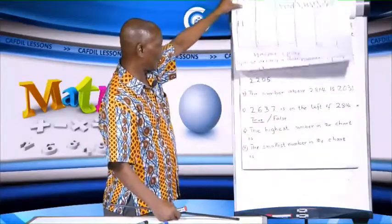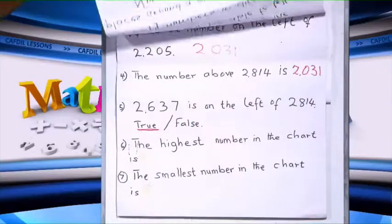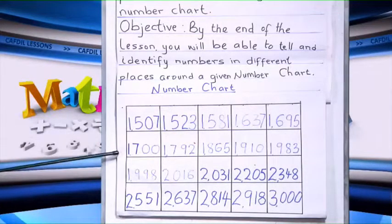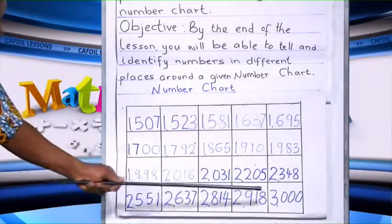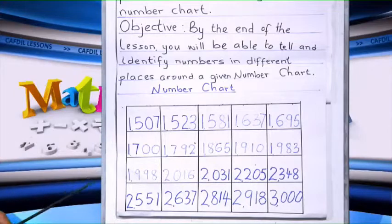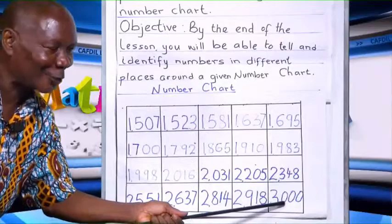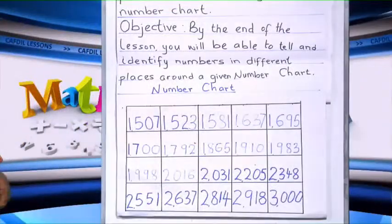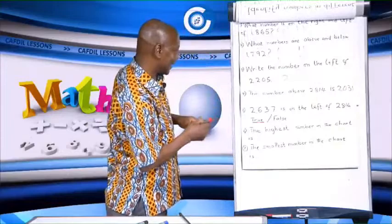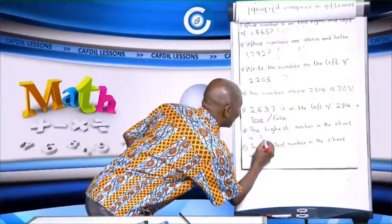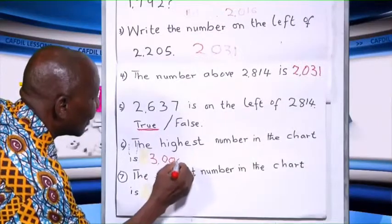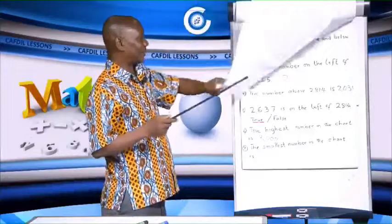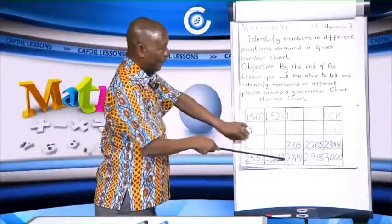Then let us go to question 5: the highest number in the chart is... 3,000. Good. The highest number in the chart is 3,000. All the numbers are below 3,000, so 3,000 is the highest number.